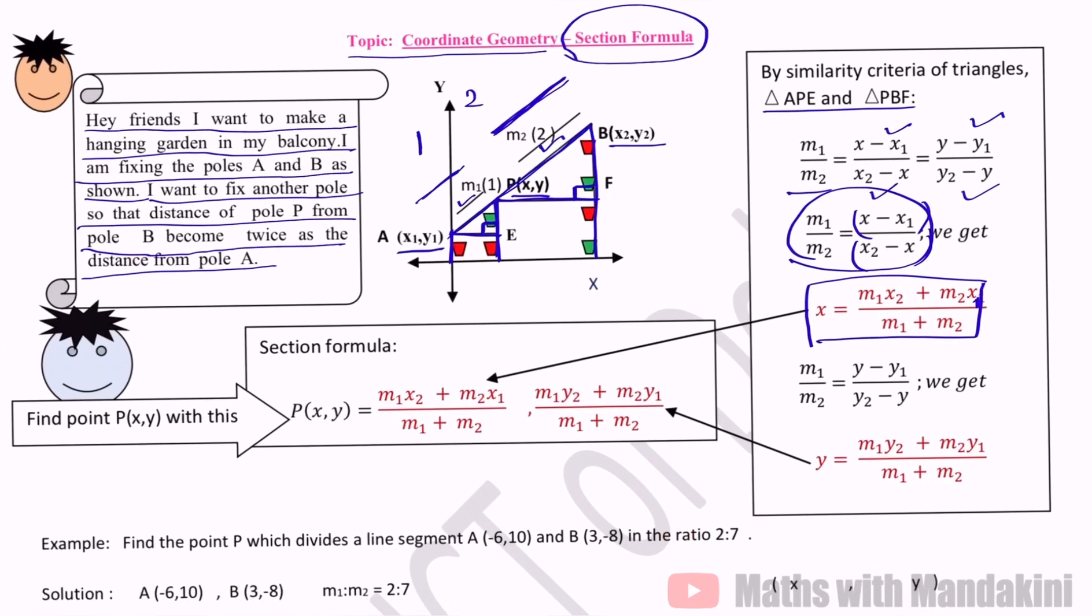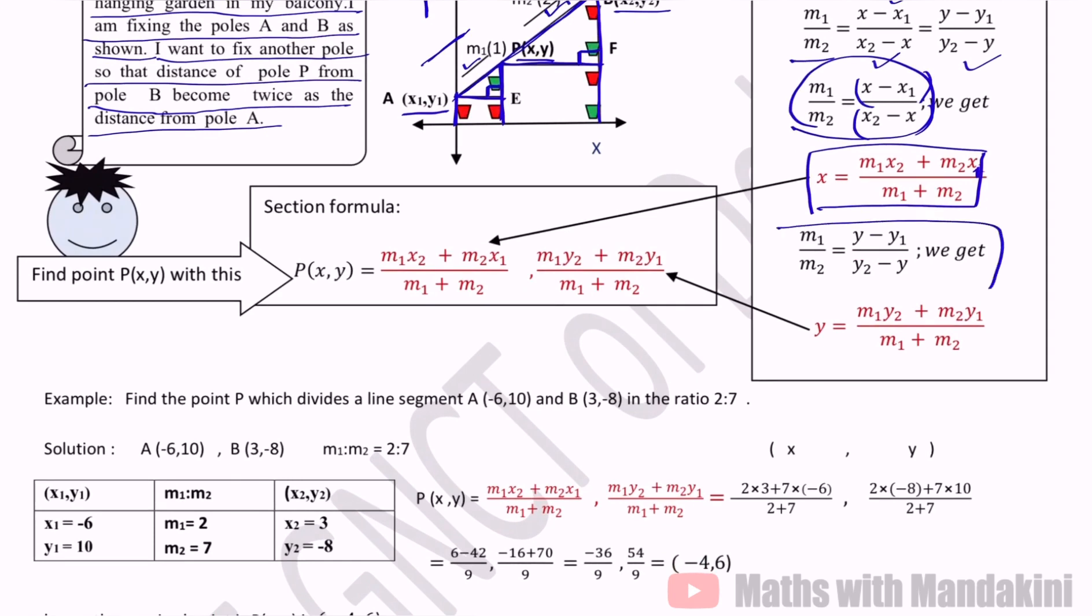We get x is equal to M1x2 plus M2x1 upon M1 plus M2. Similarly, when we compare y in the same part, if we cross-multiply, y is equal to M1y2 plus M2y1 upon M1 plus M2. And these are the required coordinates. So this is the section formula and this method is very easy. M1 then x2, M2 then x1, division will be M1 plus M2. Same for y, M1, y2, M2, y1 and division will be M1 plus M2.